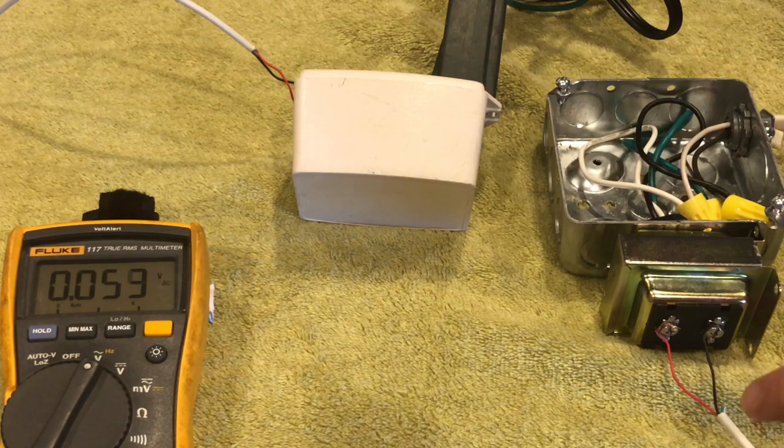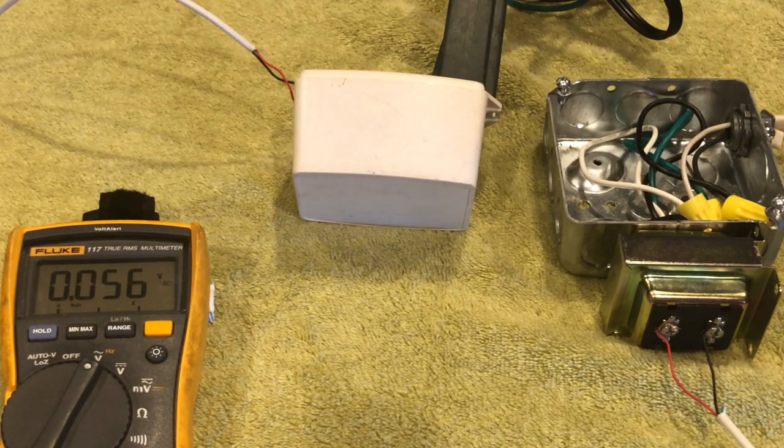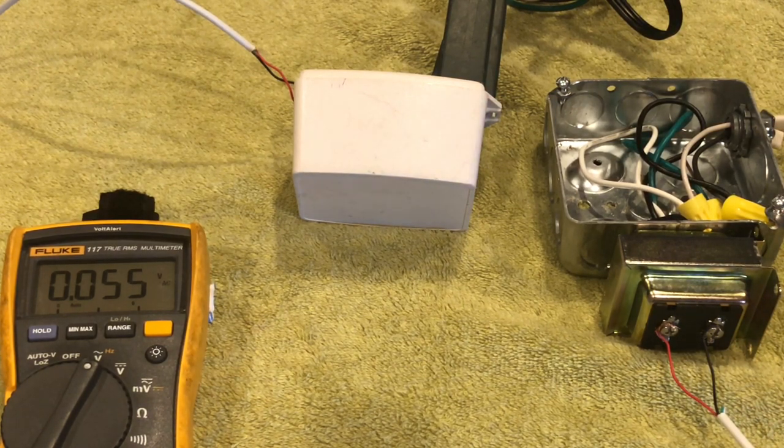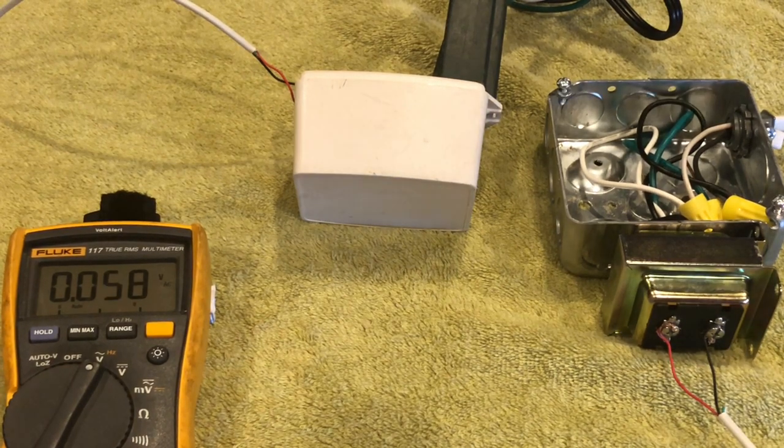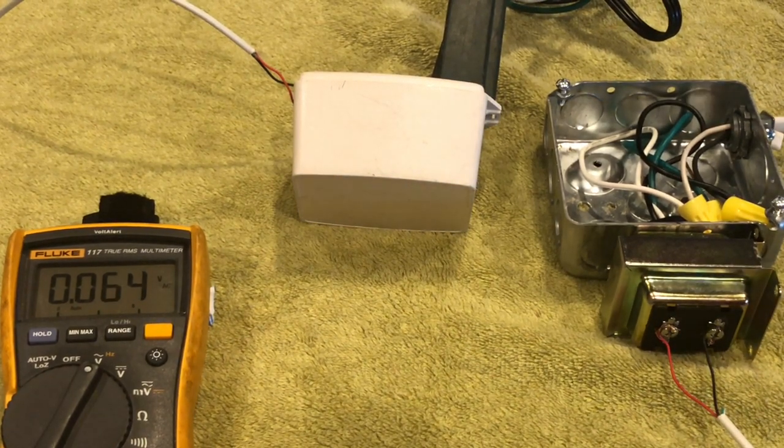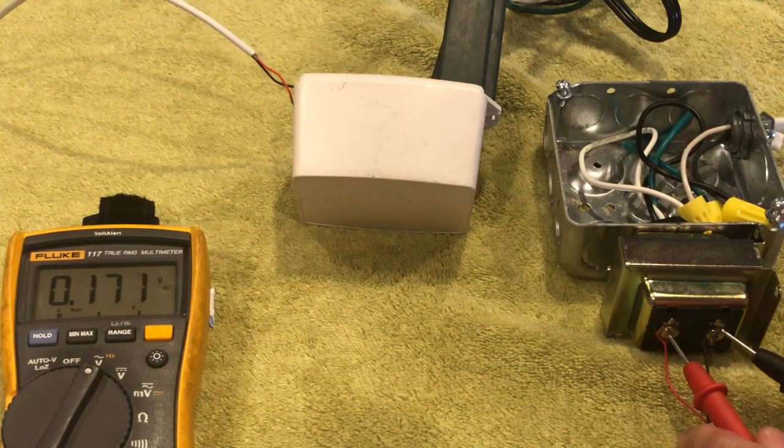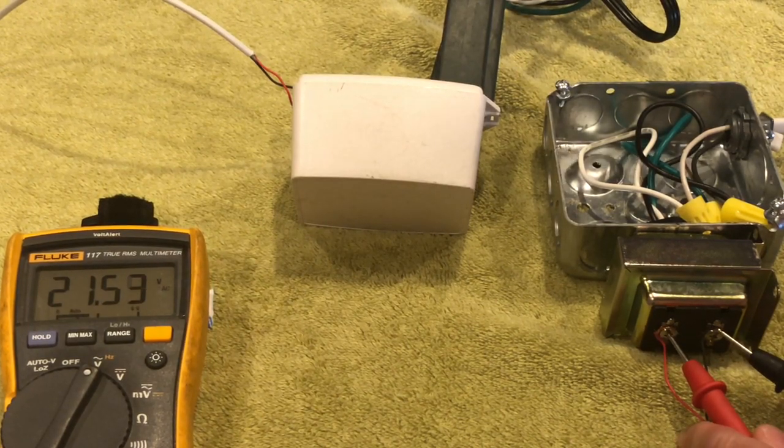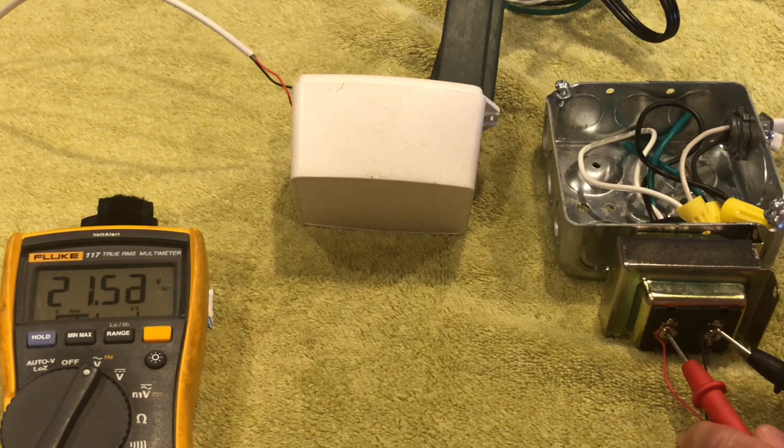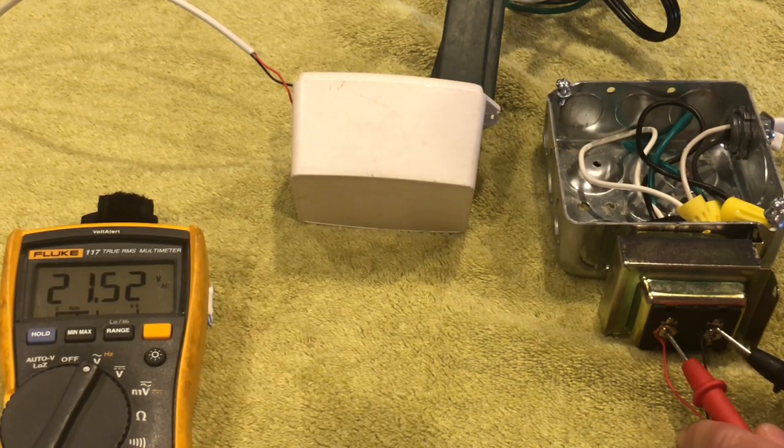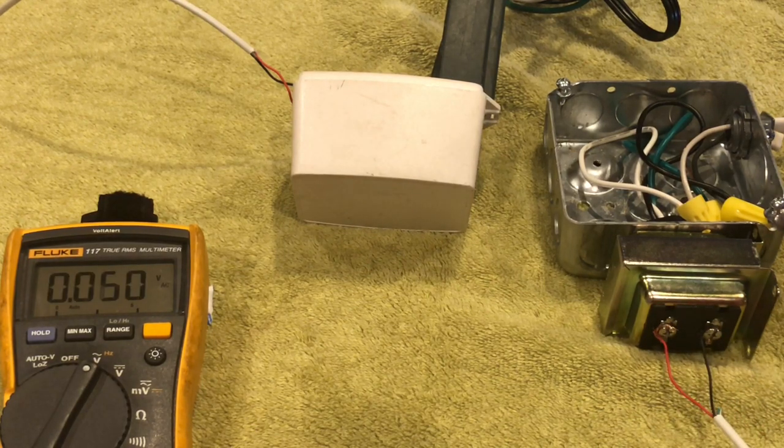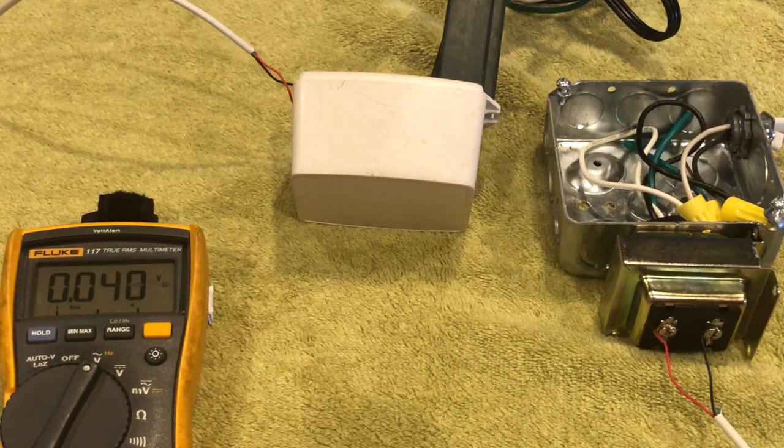So let's go ahead and see what our voltage is that it's pushing out. This is a 16 volt transformer, but it's actually pushing out 21 volts, 21 and a half volts. So I would say that this transformer would be well suited to either the Nest Hello or the Ring Video Doorbell Pro.